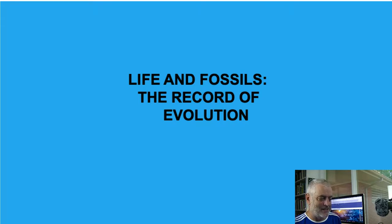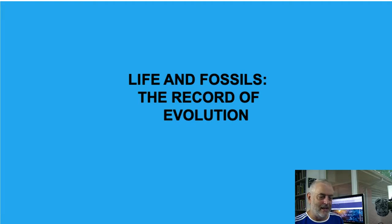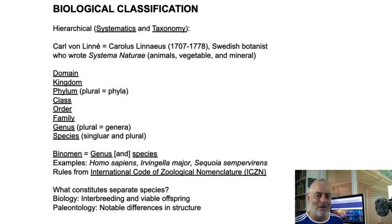Systematics and taxonomy — really biological classification — is the scheme we were given first, and later it evolved into how these things relate to one another. When we talk about systematics, we're really talking about Carl von Linné, or Carolus Linnaeus. He was a Swedish botanist who wrote Systema Naturae, and it's all about how we classify animals — one of the earliest techniques used in science.